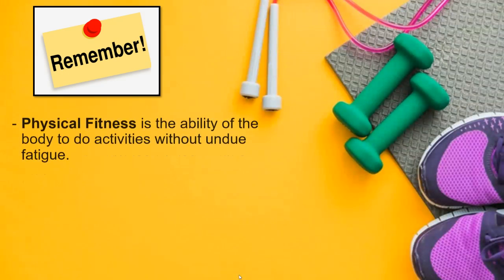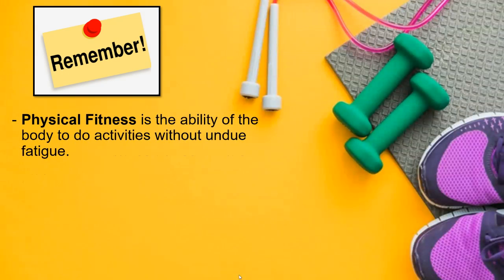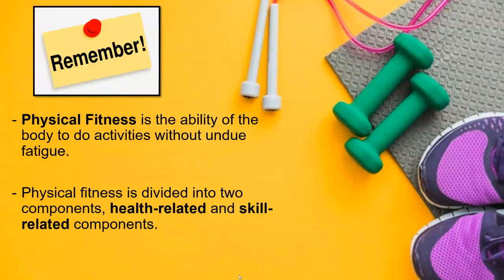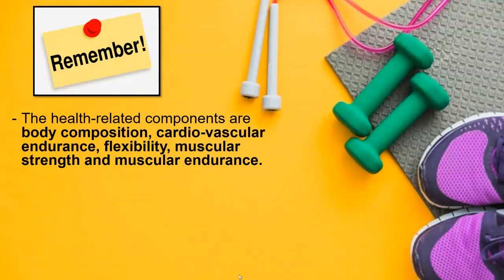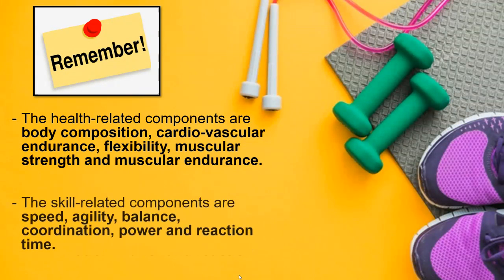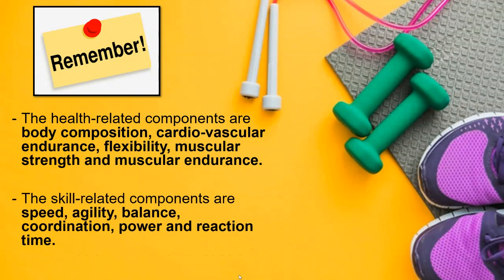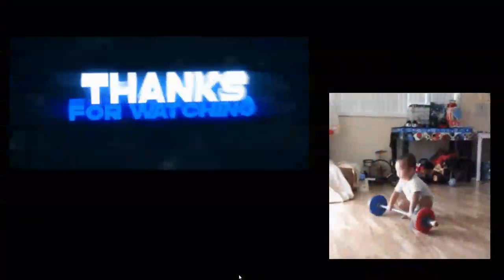Things to remember: physical fitness is the ability of the body to do activities without undue fatigue. It is divided into two components — health-related and skill-related. The health-related components are body composition, cardiovascular endurance, flexibility, muscular strength, and muscular endurance, while the skill-related components are speed, agility, balance, coordination, power, and reaction time.